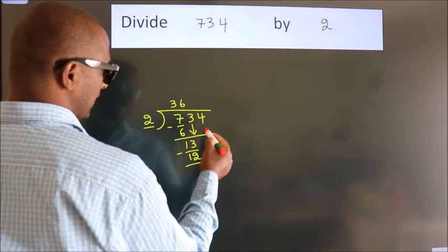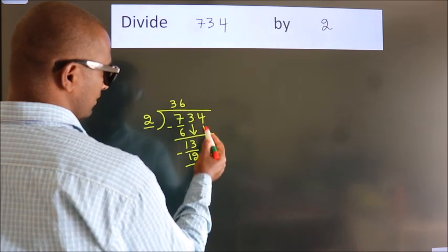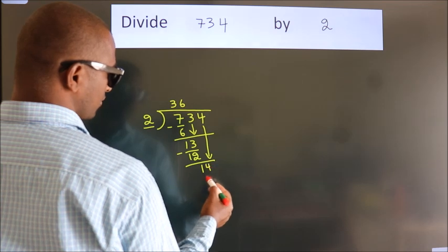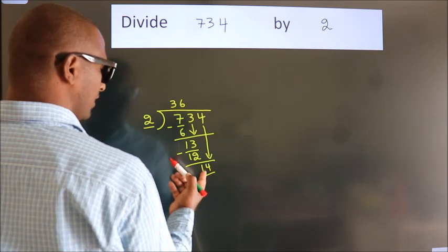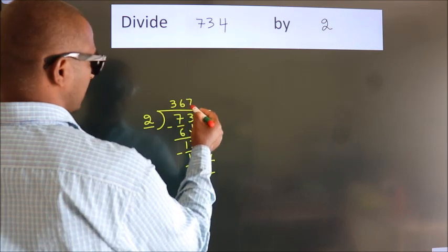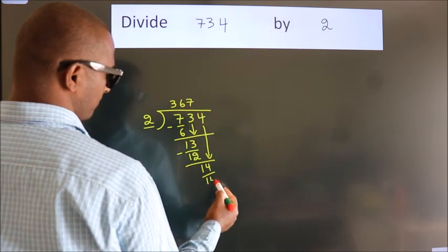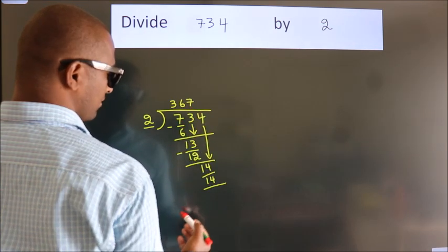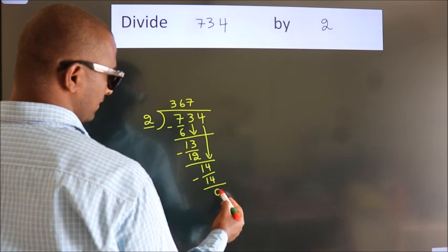After this, bring down the beside number. So, 4 down. So, 14. When do we get 14? In 2 table. 2 times 7 is 14. Now, we subtract, we get 0.